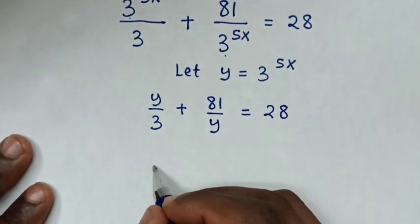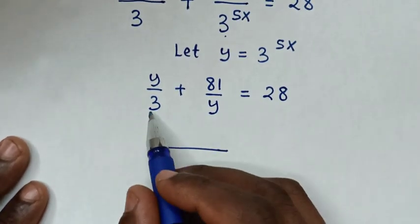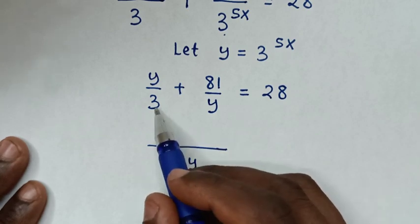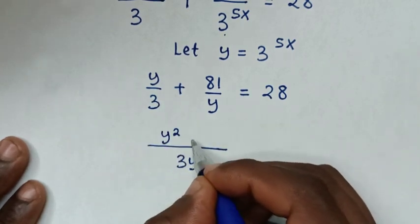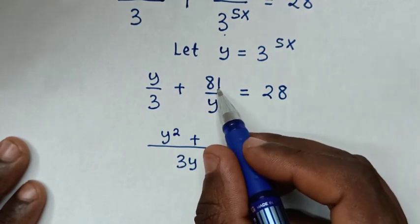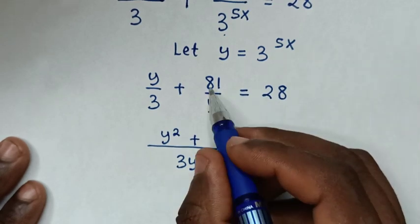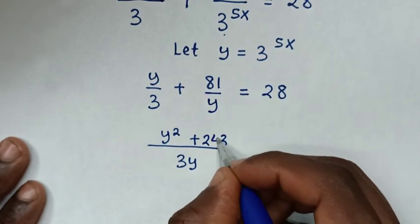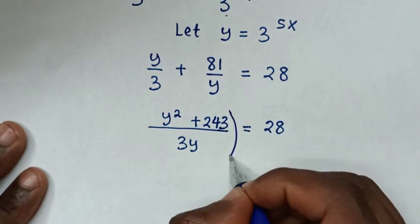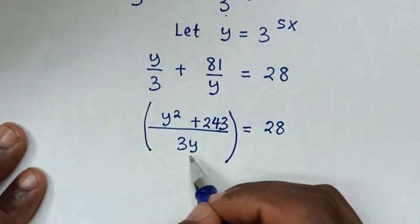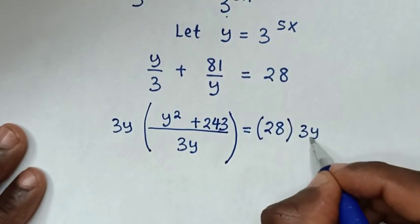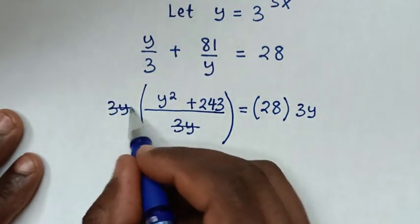The LCM of 3 and y is 3y. So 3y divided by 3 is y, giving y times y which is y squared; plus 3y divided by y is 3, and 3 times 81 is 243, equal to 28. We then multiply both sides by the denominator 3y, which cancels the denominators.